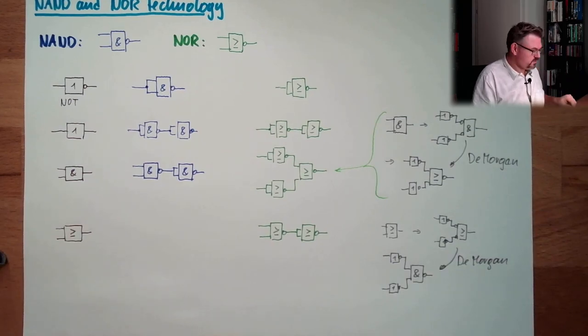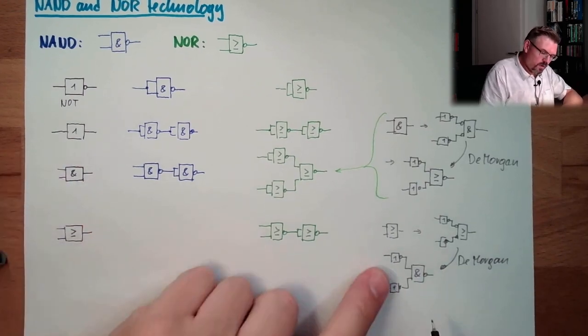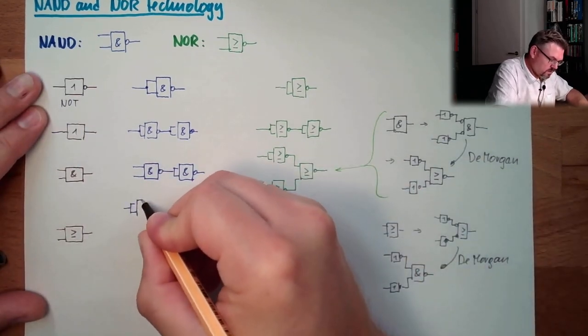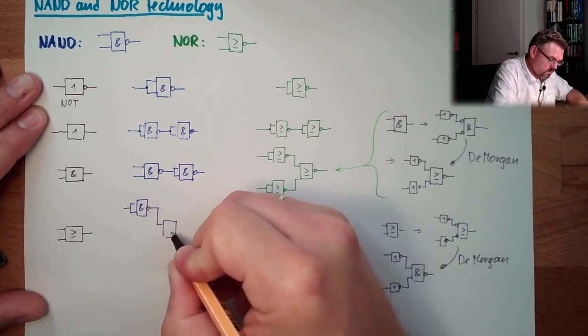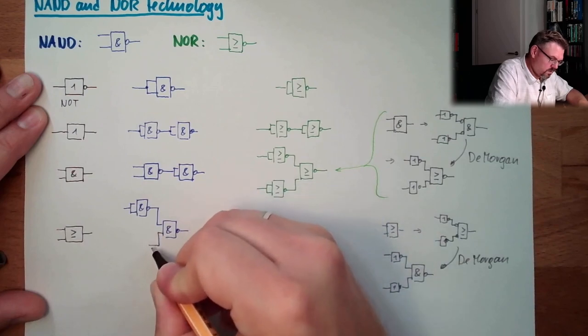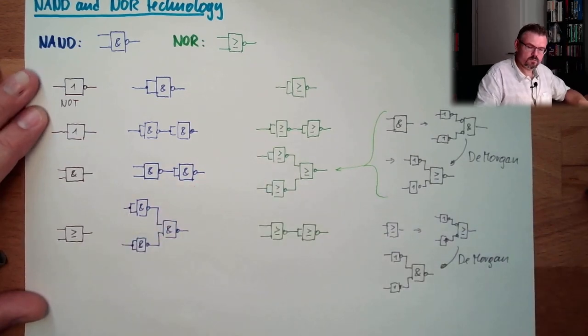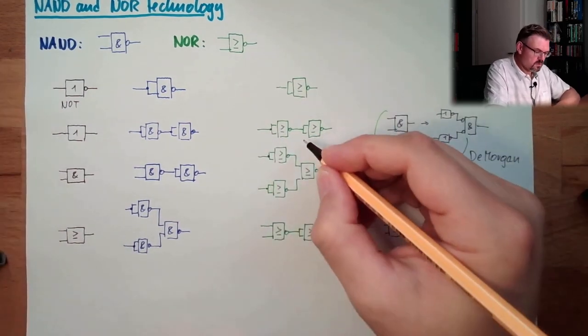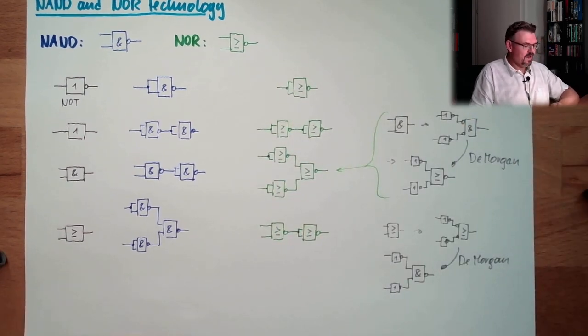Yeah? So, a NOT we already know. So we have exactly that. NOT, NAND, and here we have also a NOT. Cool, huh? So we also managed to produce an AND. Okay?